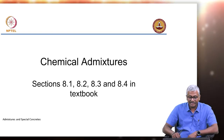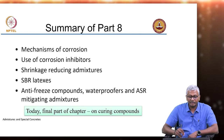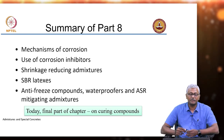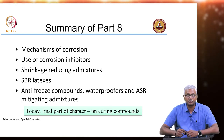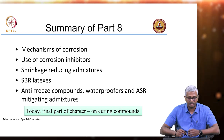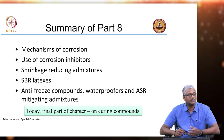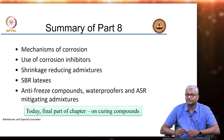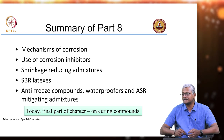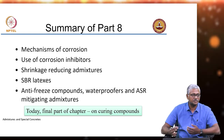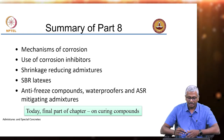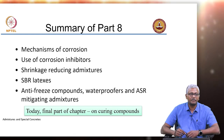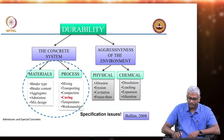This is the last segment of the chapter on chemical admixtures. In part 8 we looked at mechanisms of corrosion, use of corrosion inhibitors, shrinkage reducers, SBR latexes and other specialty chemicals that are added in specific situations. Today we will talk about the final part of the chapter, that is curing compounds.